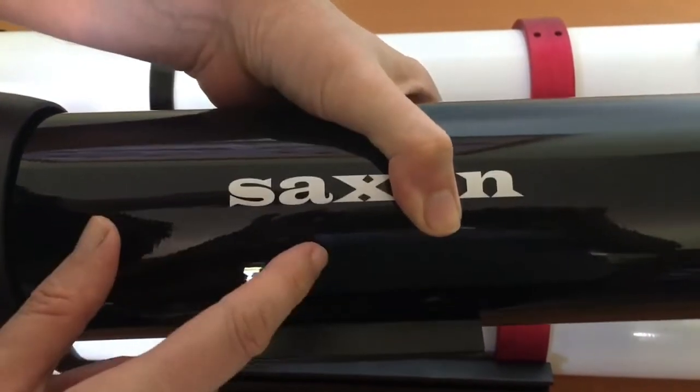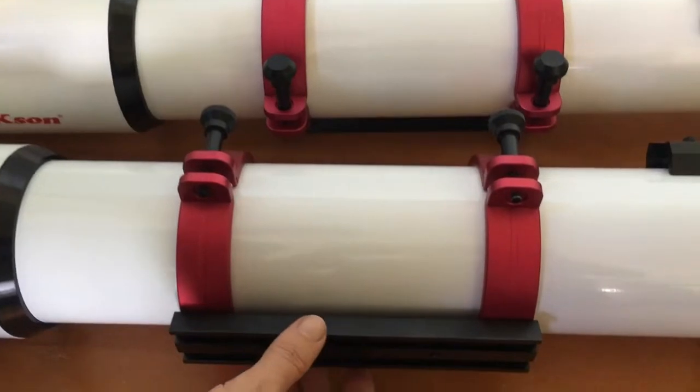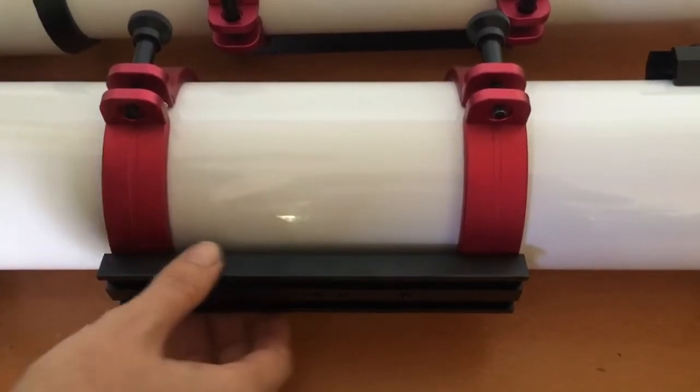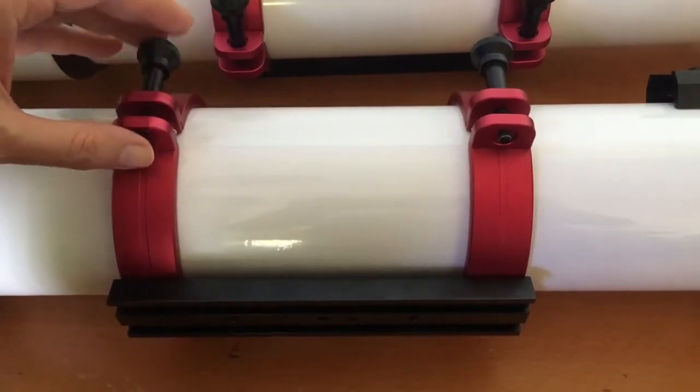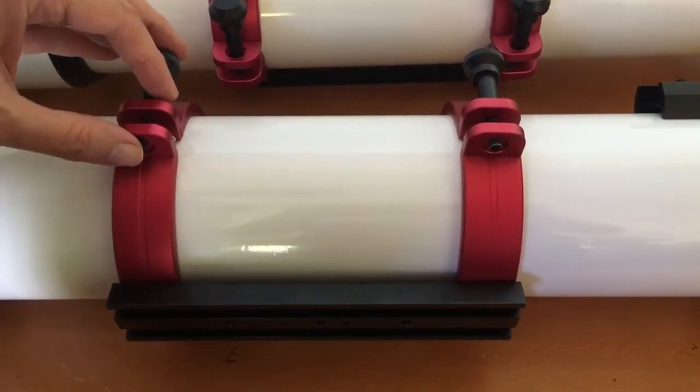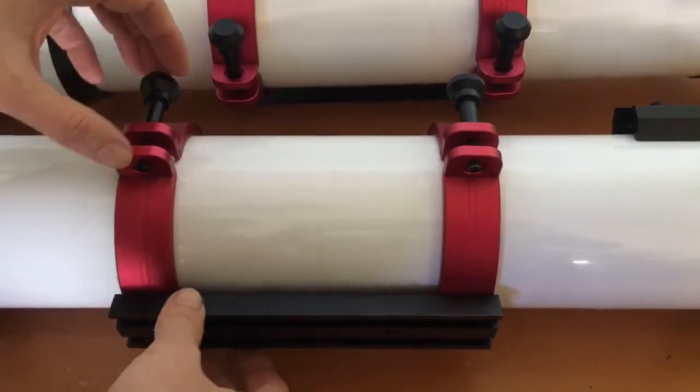Let me just show you. There are no rings that come with a Saxon. It's just a Vixen plate that's mounted directly into the tube. On the Kason here, you immediately have rings. Just the rings themselves are about $120 normally. So you can see the value that comes with it.